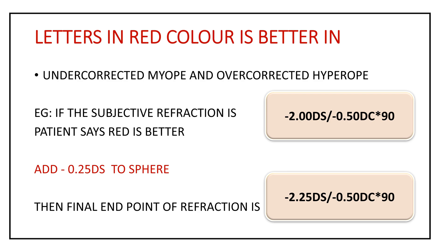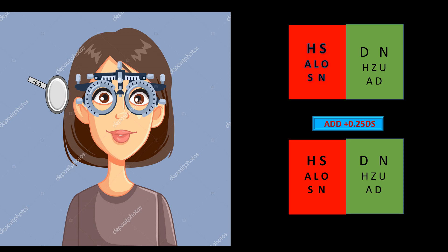For example, if a patient's subjective refraction is minus 2.5 cylinder at 90 and the patient says red is better, you add minus 0.25 spherical to the spherical correction without disturbing the cylindrical correction. The final endpoint of refraction becomes minus 2.25 spherical with 0.5 cylinder at 90.